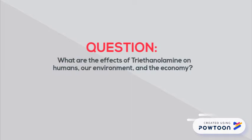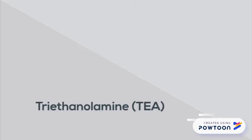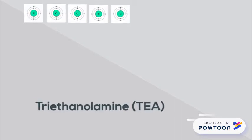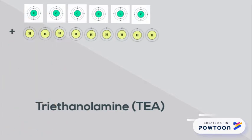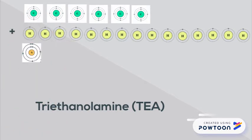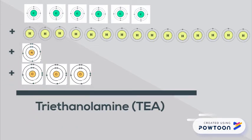The question that we will be asking ourselves throughout this presentation is: what are the effects of triethanolamine on humans, our environment, and the economy? The substance of our controversial element project is triethanolamine. Triethanolamine is made up of six atoms of carbon, 15 atoms of hydrogen, one atom of nitrogen, and three atoms of oxygen.